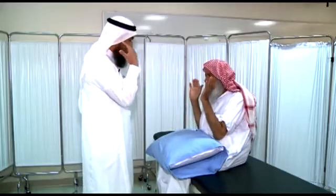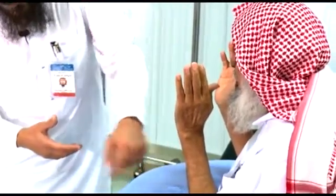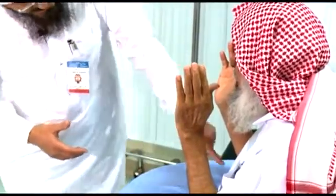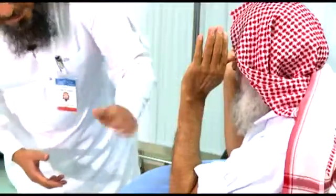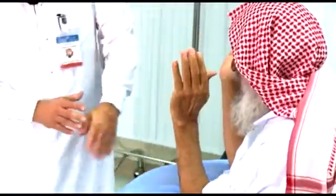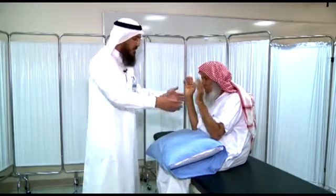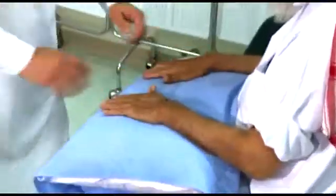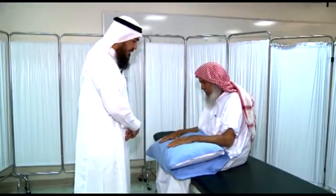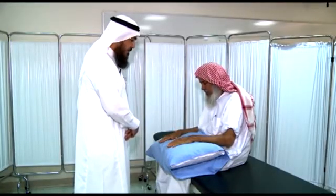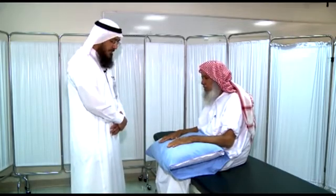We also inspect the skin of the forearm and behind the elbows for any cutaneous or subcutaneous changes, such as rheumatoid nodules. That concludes the explanation of inspection, and we will now move to the next step: palpation.